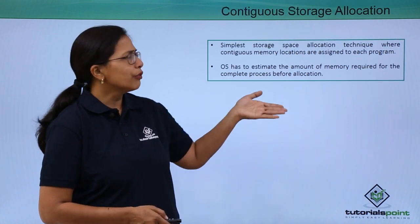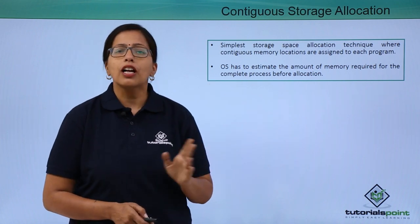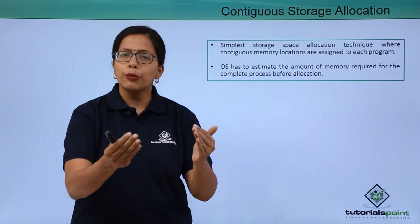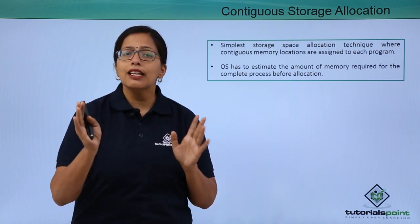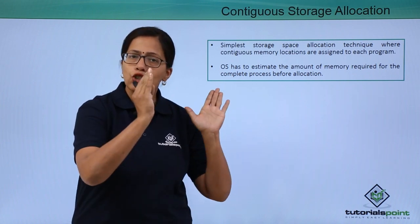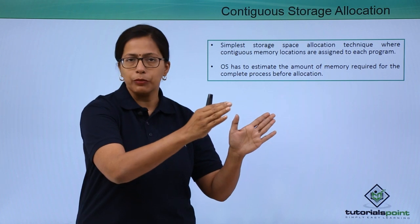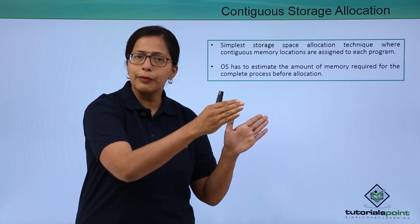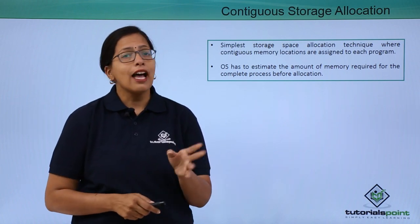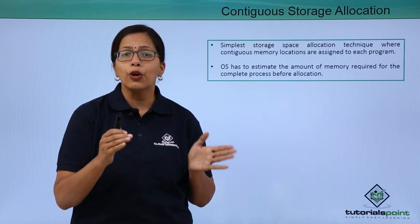The first and easiest one is contiguous storage allocation. Contiguous means continuous. The moment the job comes, the operating system will make an estimate of how much memory is required and allocate that chunk of memory in the secondary memory as well as the primary memory. However, this has a small problem — that whole chunk might not be available.